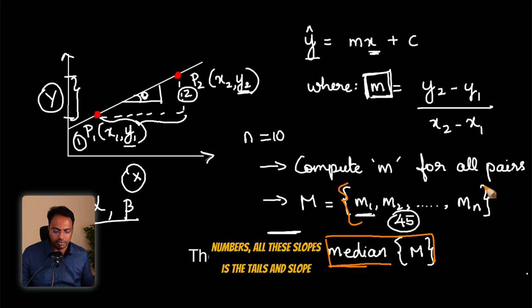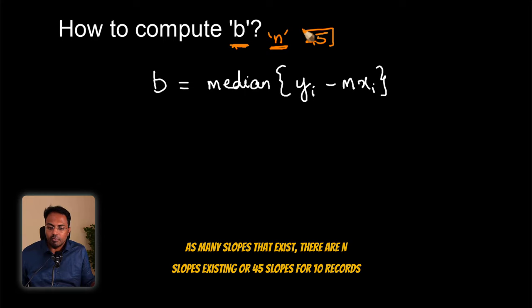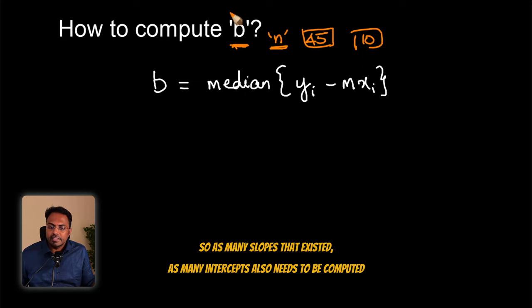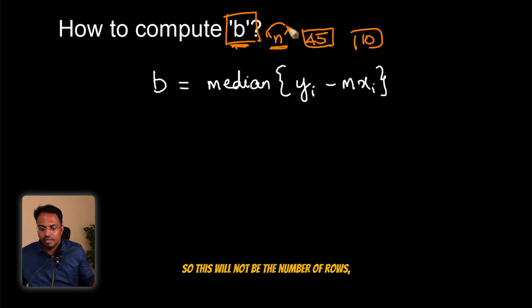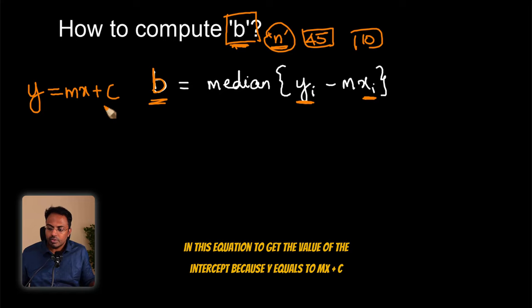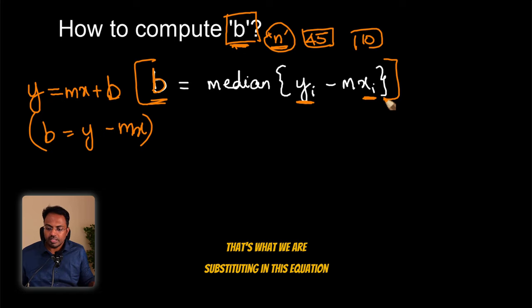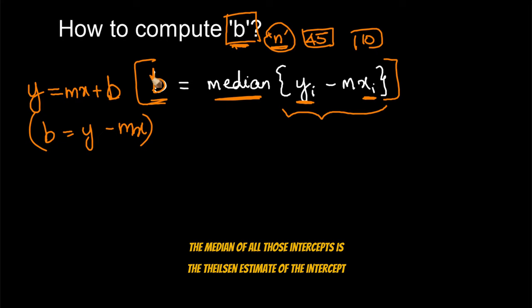Now once the slope is computed, we need to estimate the value of the intercept. As many slopes that exist, there are 45 slopes for 10 records, as many intercepts also need to be computed. So this will be all possible combinations of the data points, so 45 when there are 10 records. To compute the intercept, we simply substitute the values of yi and xi in this equation to get the value of the intercept, because y equals mx plus c or in this case we write the intercept as b. So mx plus b. So b becomes y minus mx. That's what we are substituting in this equation and the median of all those intercepts is the estimate, Theil-Sen estimate of the intercept.